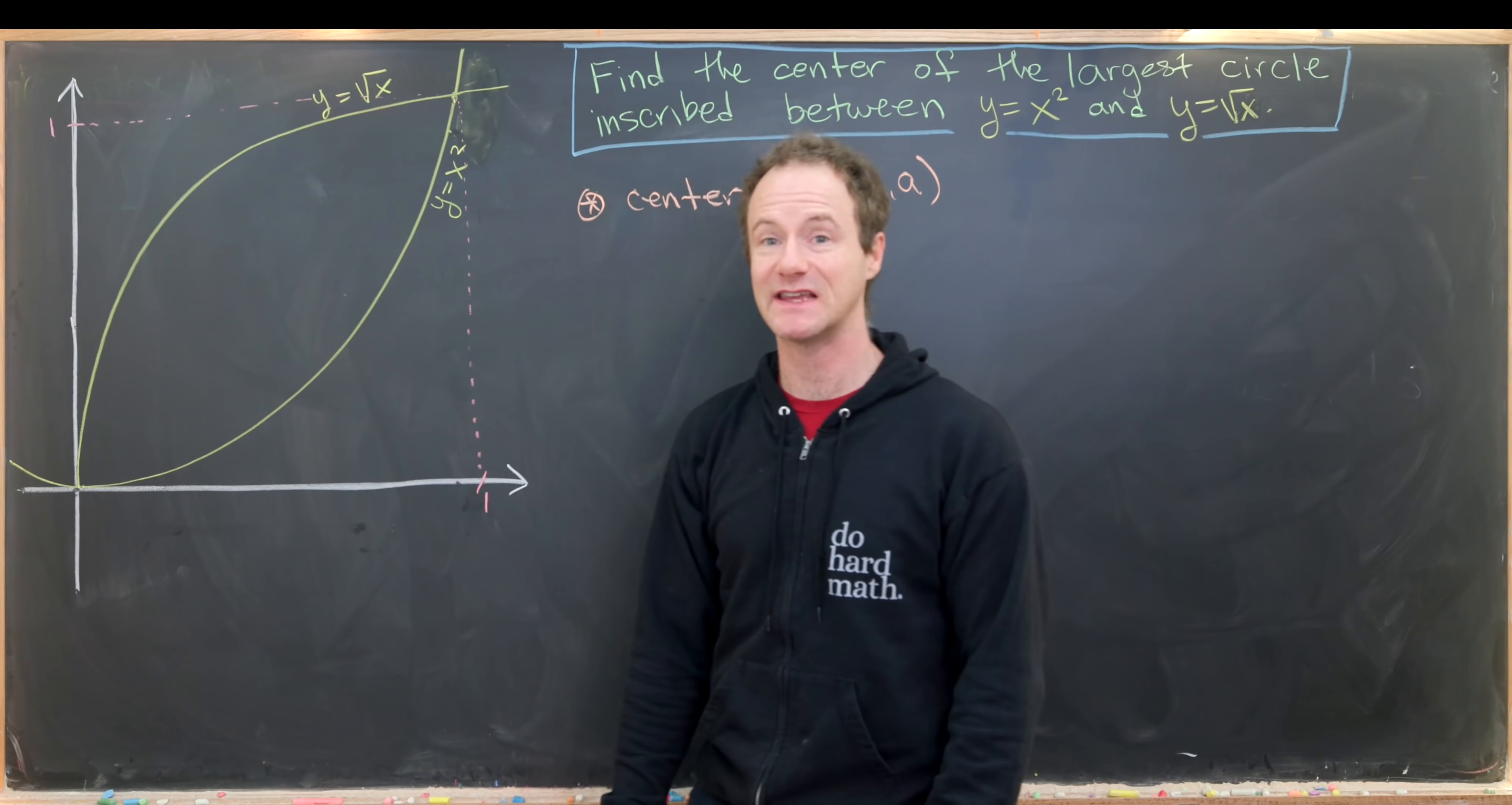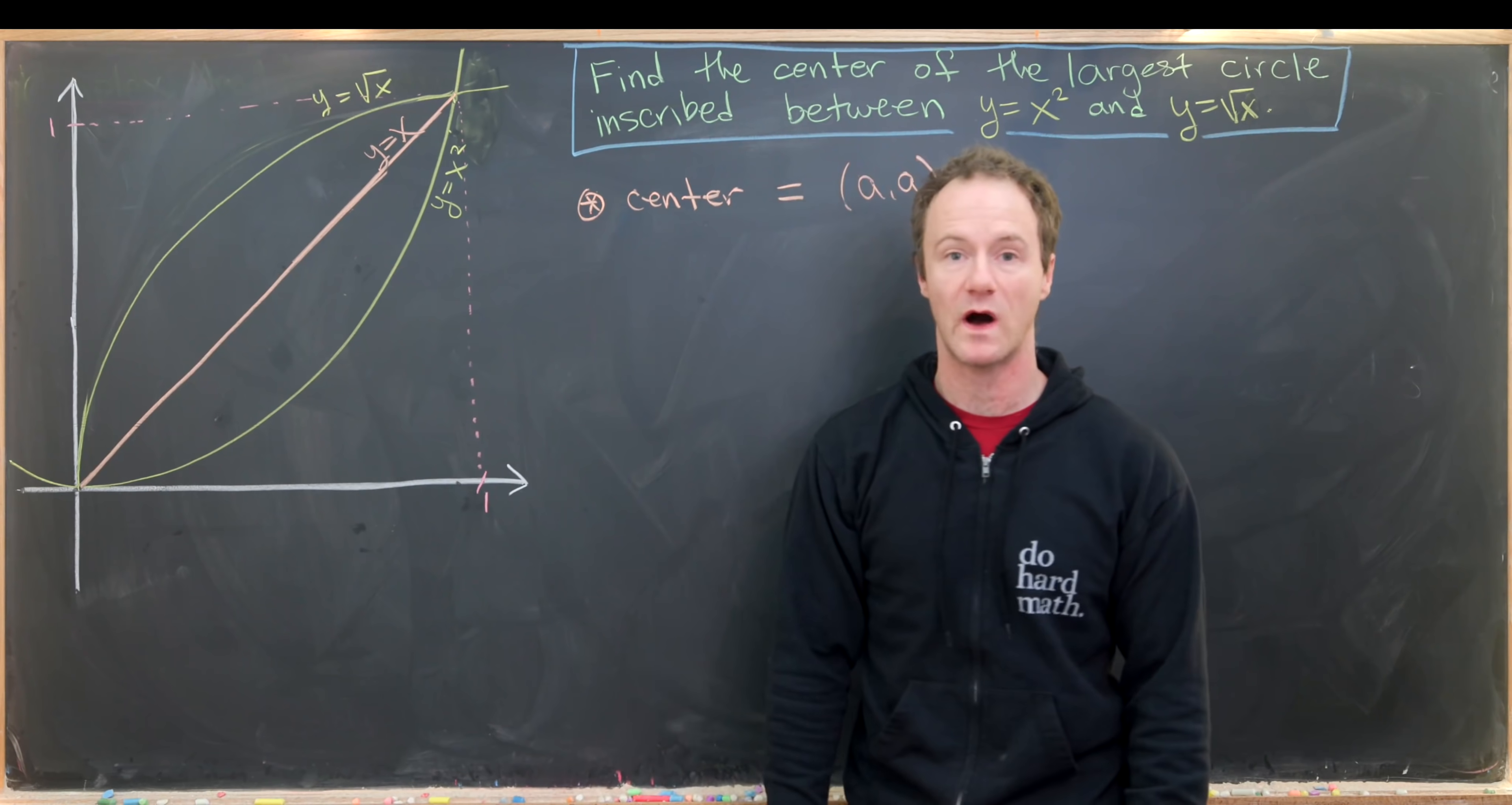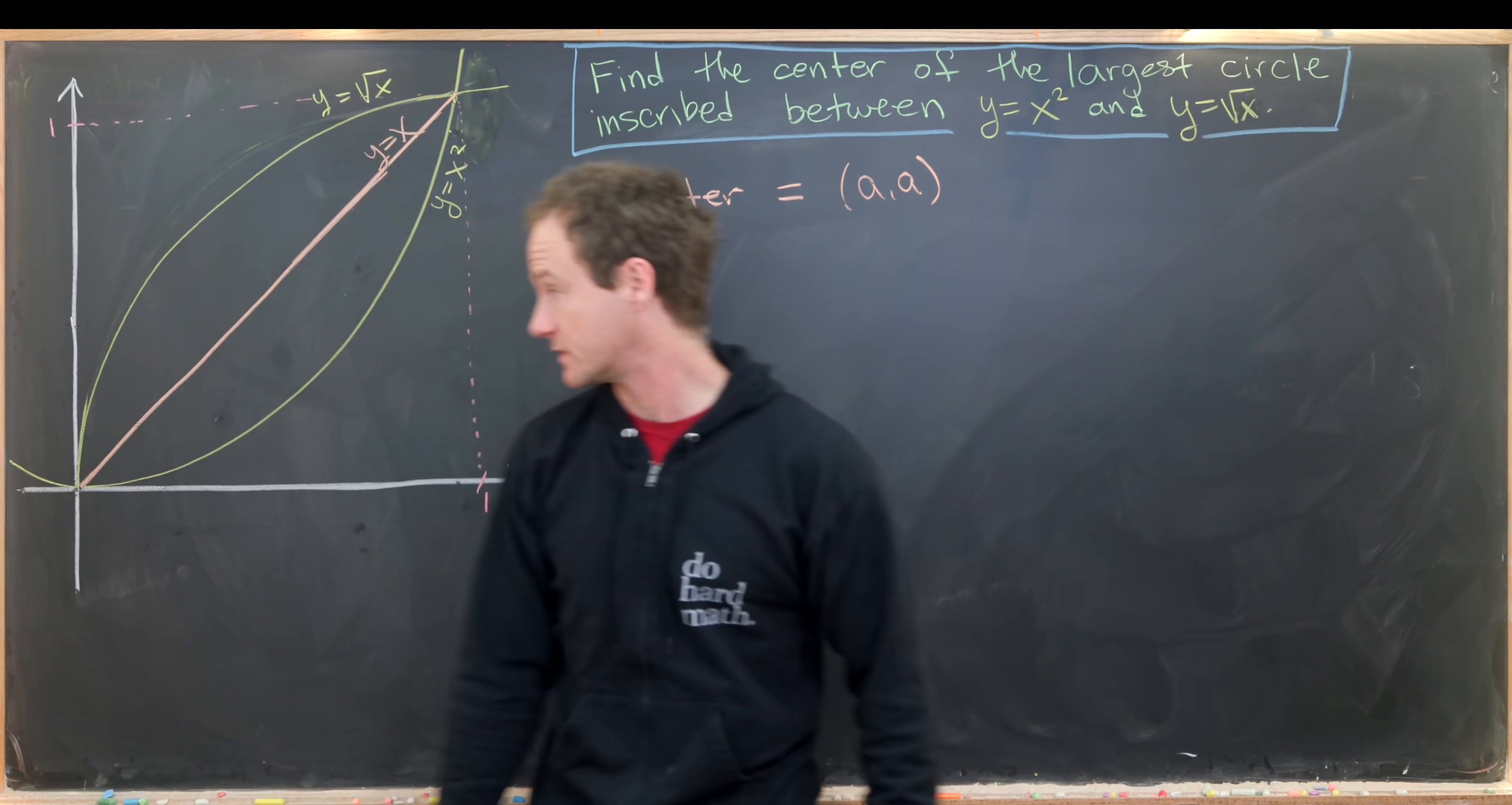While we're at it, let's get a copy of the line y equals x in this picture. We've got a graph of the line y equals x. The center of our circle must lie on that line from symmetric reasons.